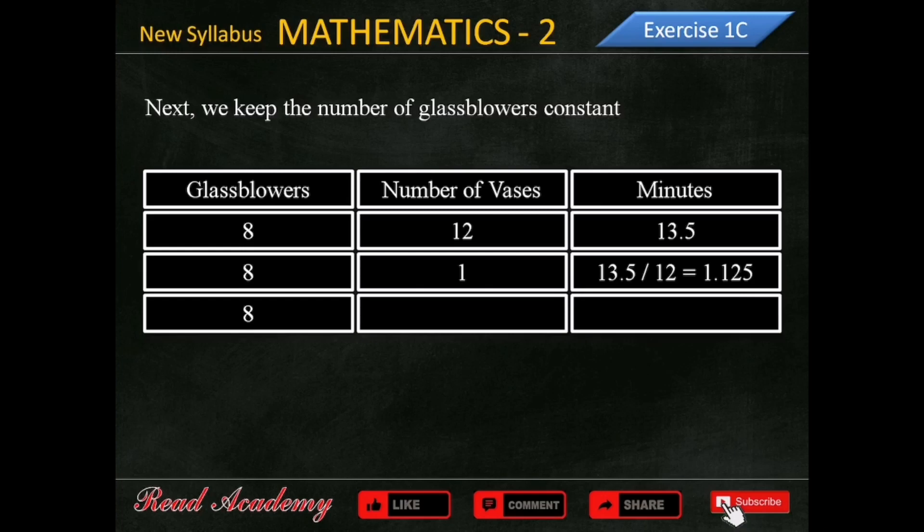Now, how long will it take to make 32 vases if the number of glassblowers is constant? As one vase takes 1.125 minutes,